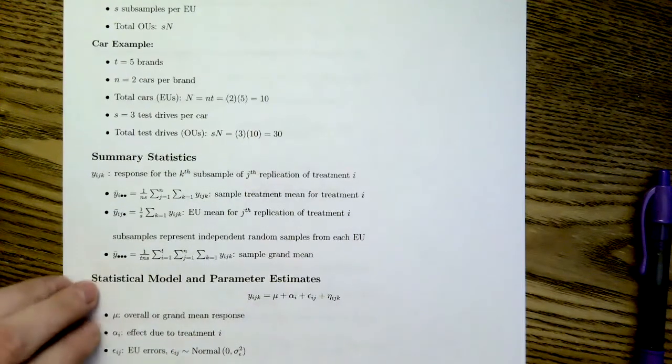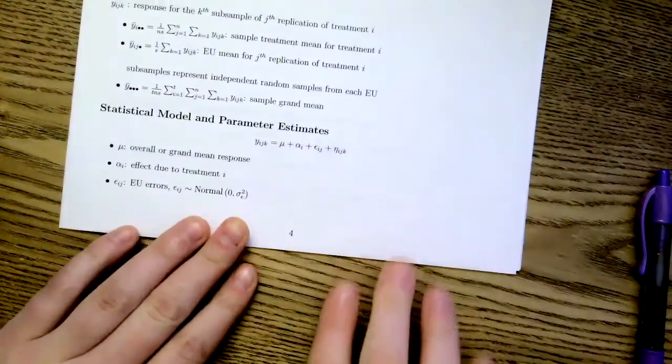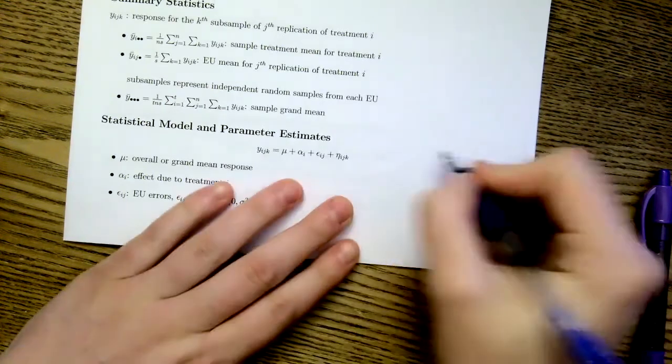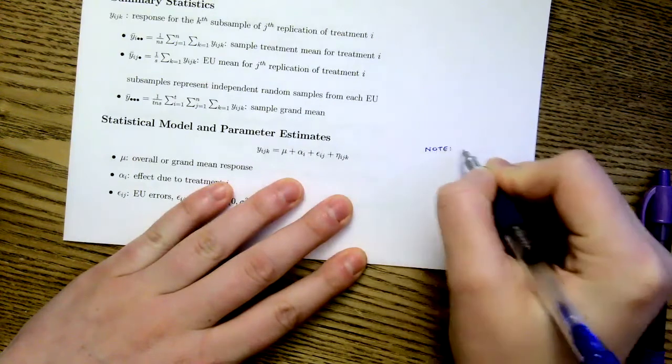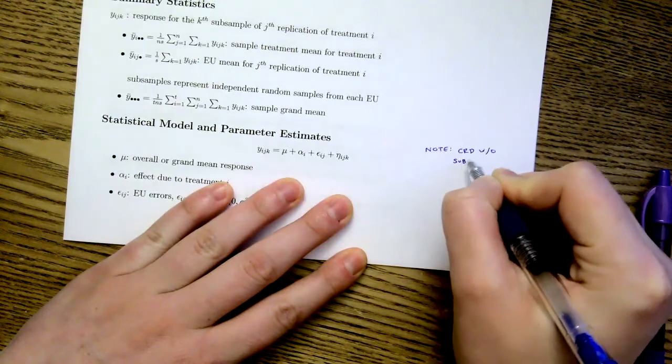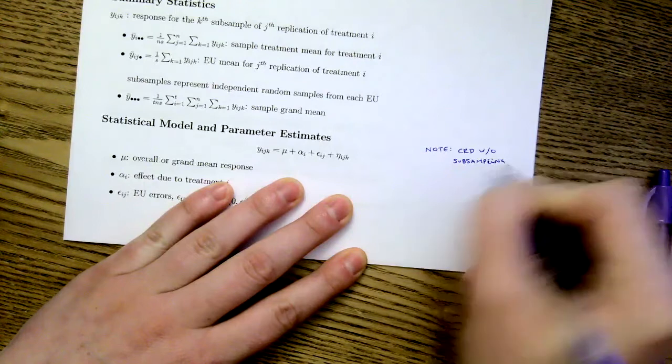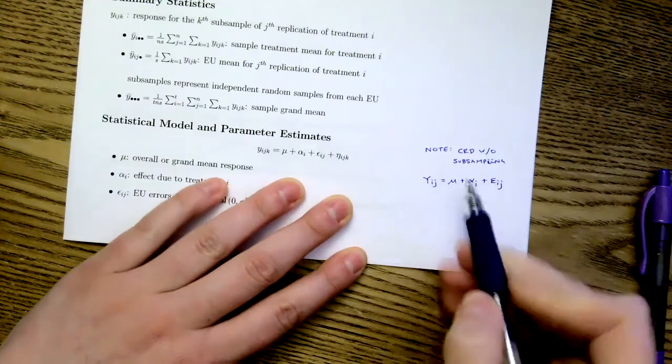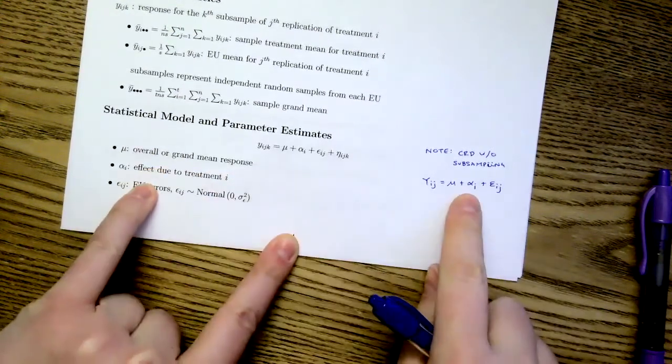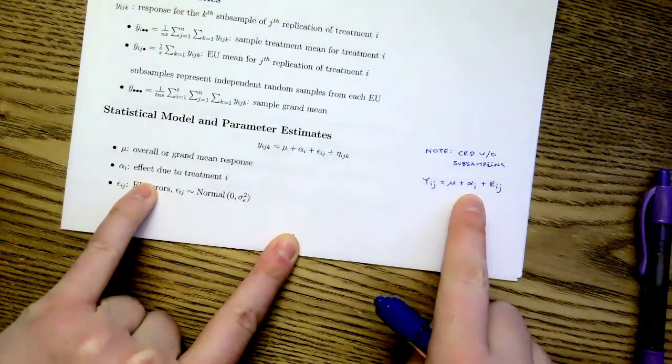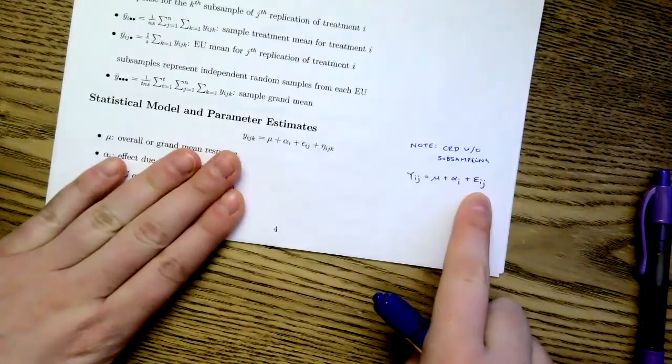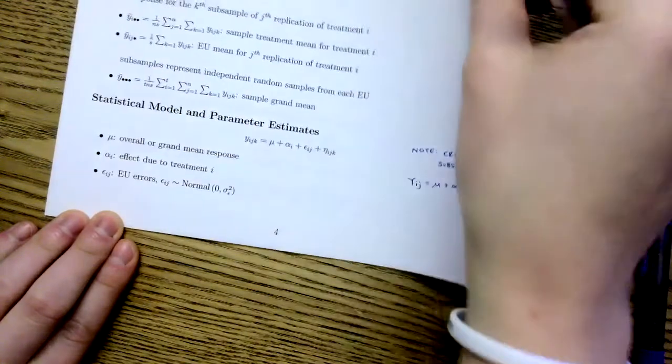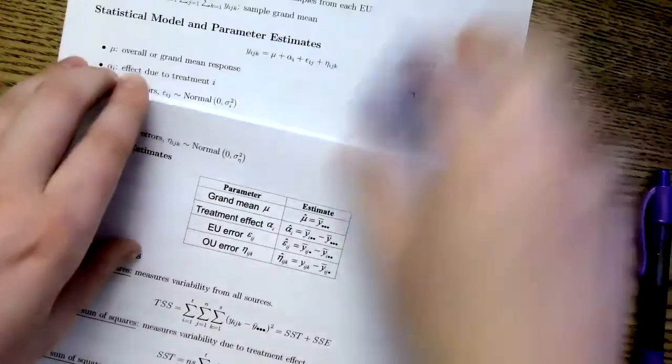Now let's look at the statistical model. Previously, when we had a completely randomized design without subsampling, our model looked like y_ij equal to mu plus alpha_i plus epsilon_ij, where we had the grand mean, our treatment effect due to treatment i, and then we had an error. This was representing our error for the experimental units.